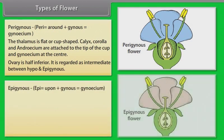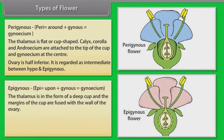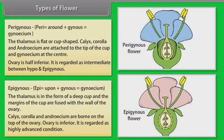In epigynous flowers, the thalamus is in the form of a deep cup and the margins of the cup are fused with the wall of the ovary. Calyx, corolla, and androecium are born on the top of the ovary. The ovary is inferior. It is regarded as a highly advanced condition.